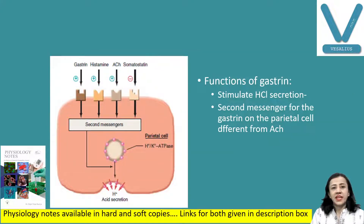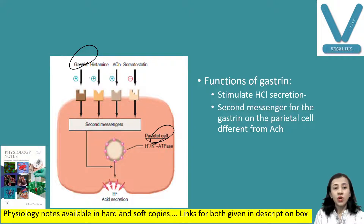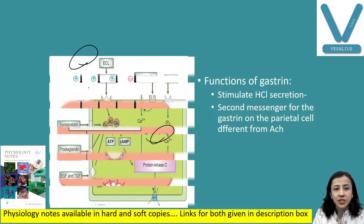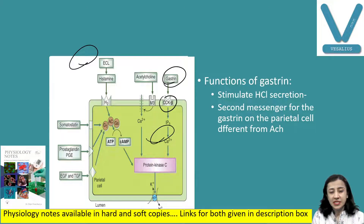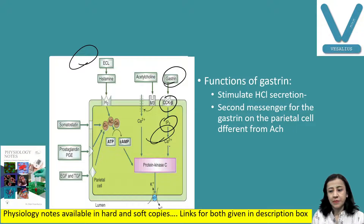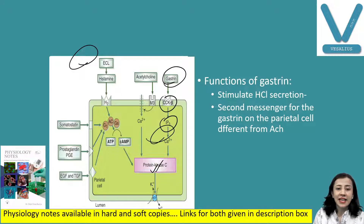What are the functions of gastrin? Gastrin acts on the parietal cell and increases the secretion of HCL. It acts through a second messenger: it acts on calcium channels and releases calcium. Specifically, gastrin binds with CCK-beta receptors and activates inositol triphosphate (IP3), which in turn increases the release of calcium ions. These calcium ions activate protein kinase C, and protein kinase C increases the activity of K+/H+ ATPase, so H+ secretion increases.